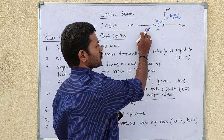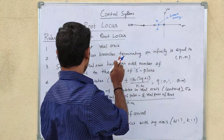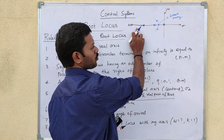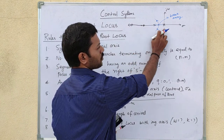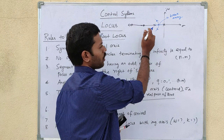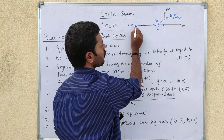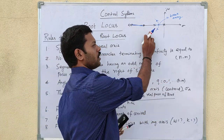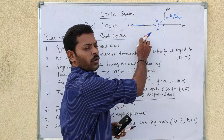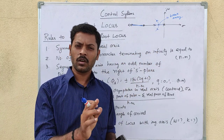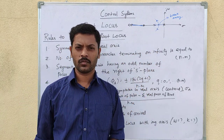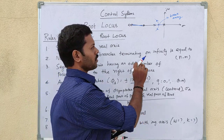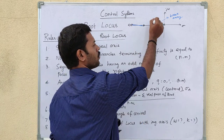For point number 3, counting 1, 2, 3 — that is an odd number of poles and zeros, so this is on the root locus. After the two poles, we reach the zero. The breakaway point is found between the poles before they reach the zero.